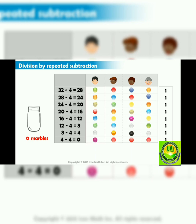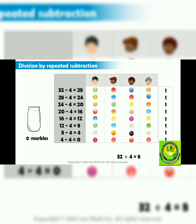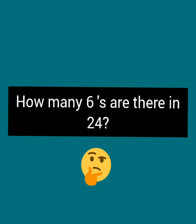To find the answer of 32 divided by four, we count the ones we wrote in the column. We have eight ones, so the answer is eight. That means every child gets eight marbles when we divide 32 marbles among four people — so eight is the quotient.